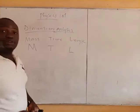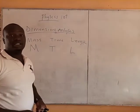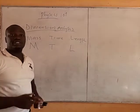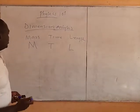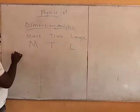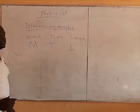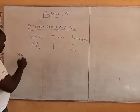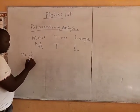Now, for you to be very good under this dimension analysis, you need to know the definition of a lot of physical quantities. For example, I may ask what is the dimension of velocity — but you have to know the definition of velocity first. So velocity is distance all over what?